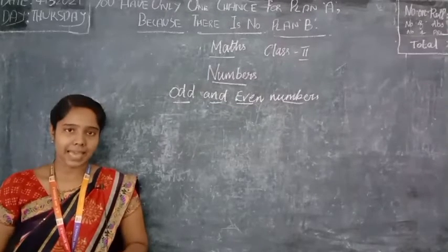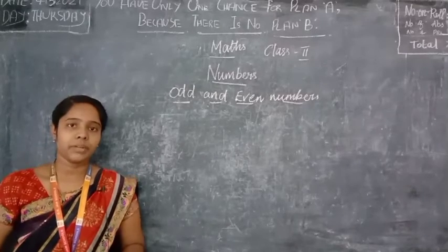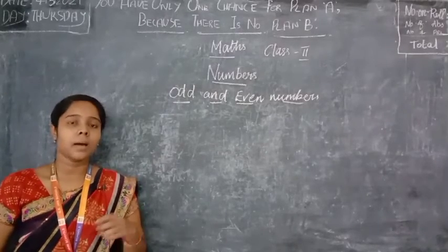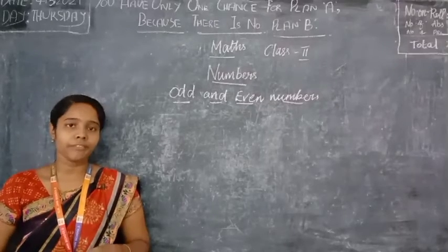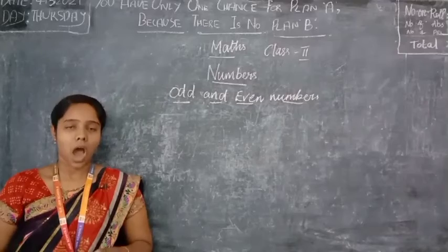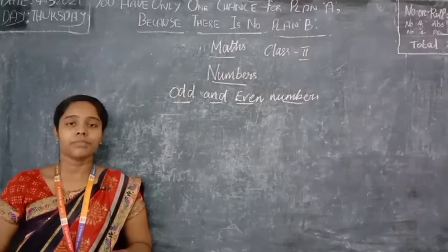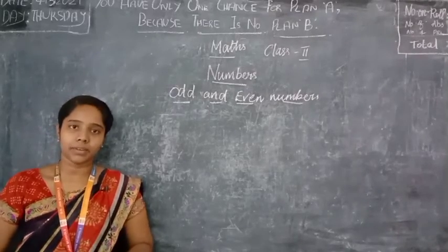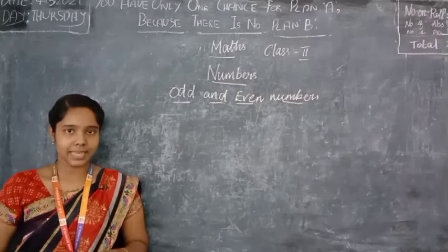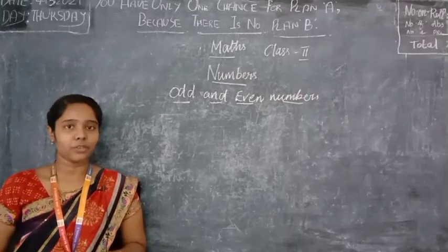From this exercise you must have understood how to find whether a given number is an odd number or even number by making sets of twos. I hope you understand how to make sets of twos and find out whether the given number is an even number or an odd number. We will see more about this in our next video. Thank you for watching.